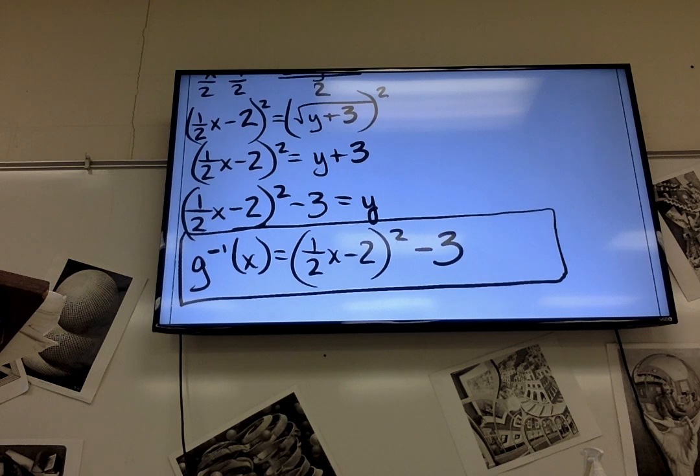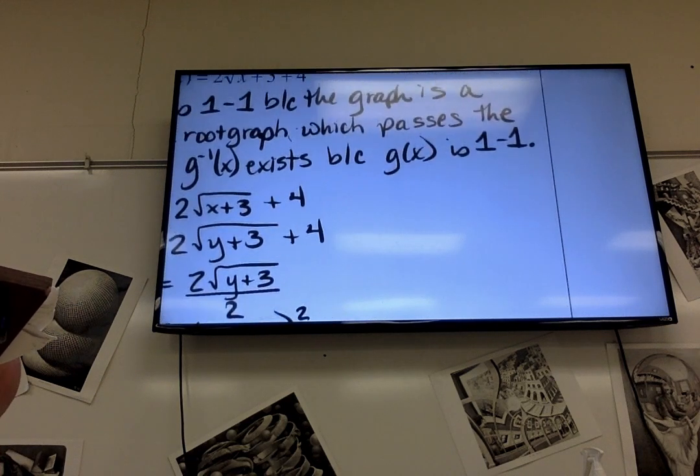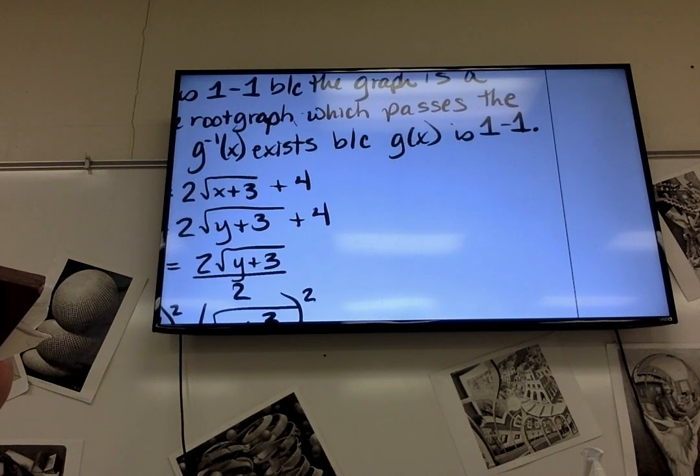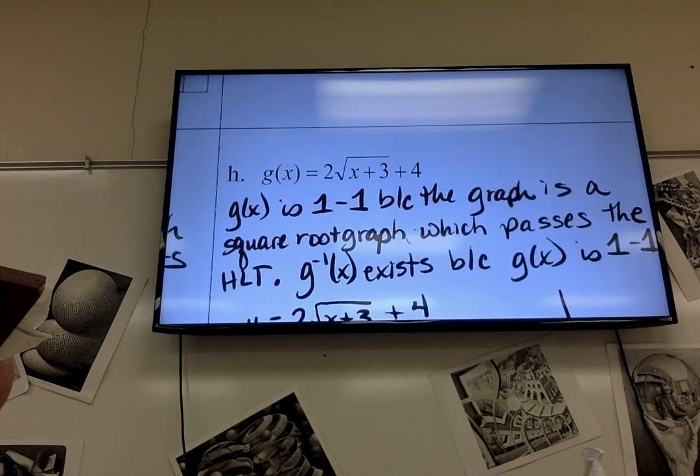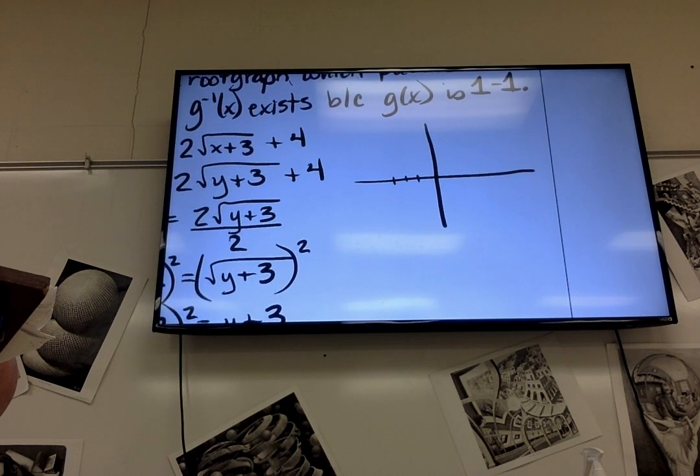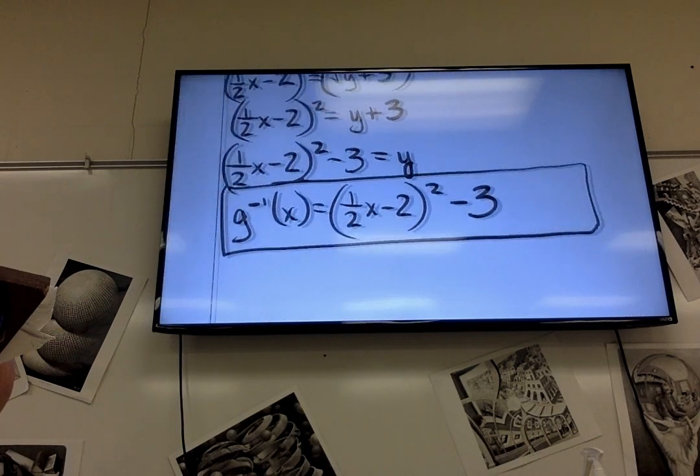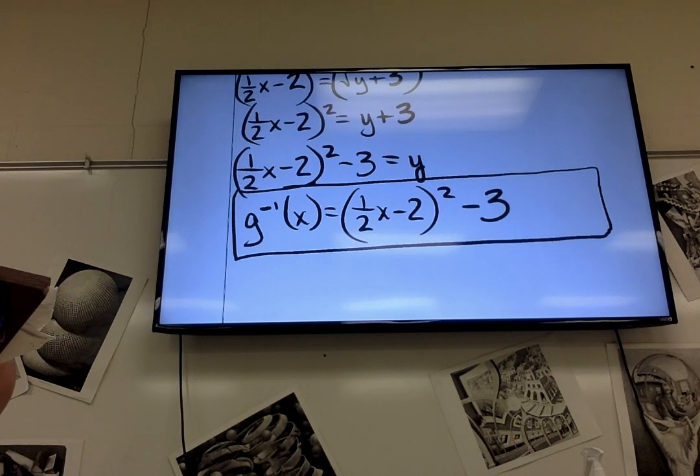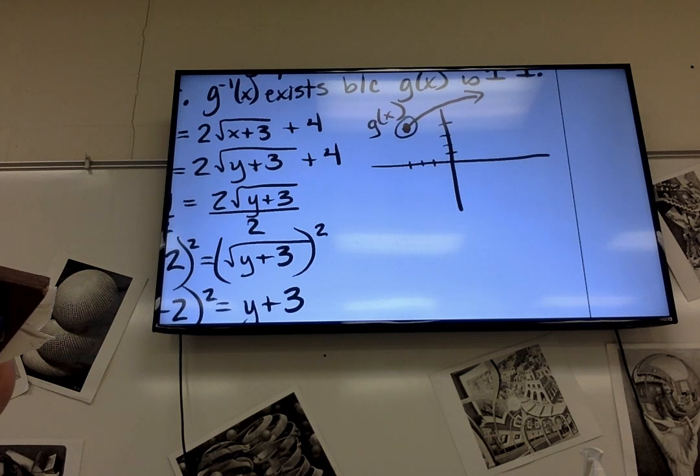And that's one little thing we've got to talk about. The original one, if I graphed it, g of x is, it goes left 3 and up 4. And it does something like that, right? That's g of x. Notice the domain and the range is restricted. It doesn't go all the way across the graph.